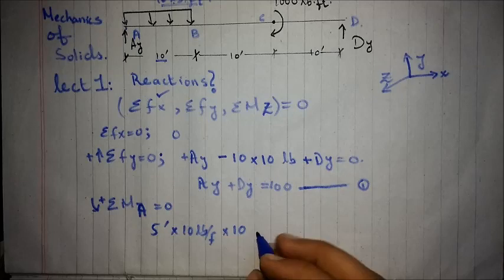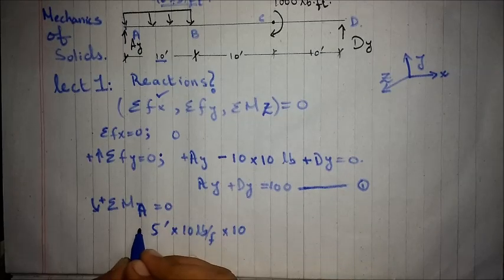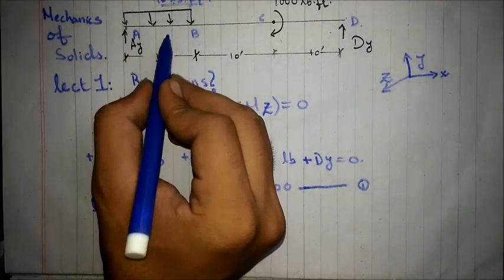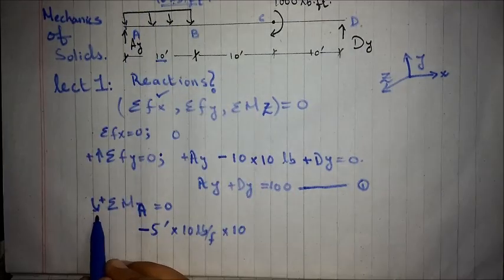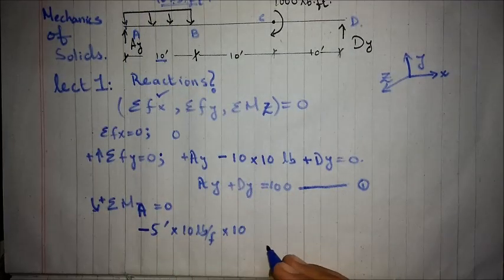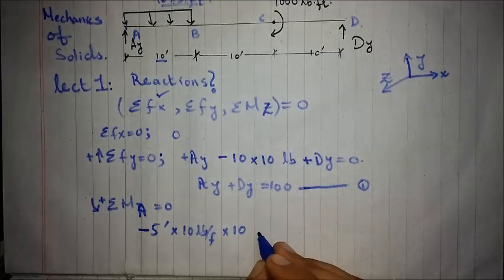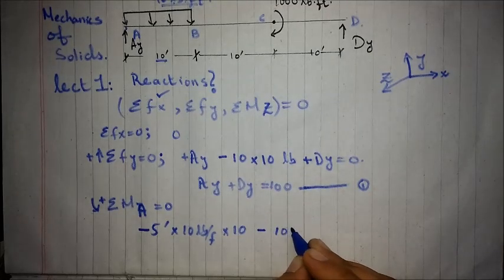5 feet multiplied by 10 pounds per foot multiplied by the intensity. So now, a negative sign has to be placed, because it is rotating in clockwise, whereas we considered anti-clockwise as positive. And the moment acting, again, in clockwise direction.